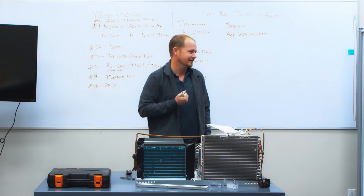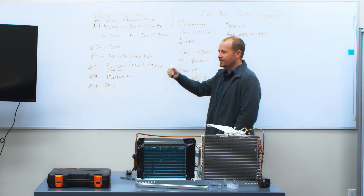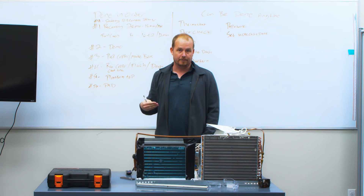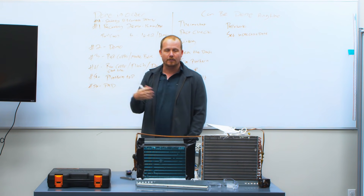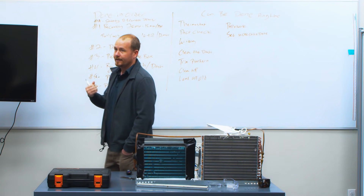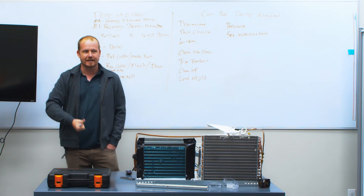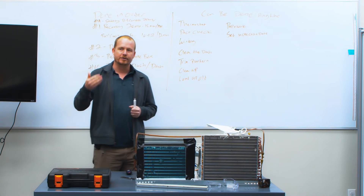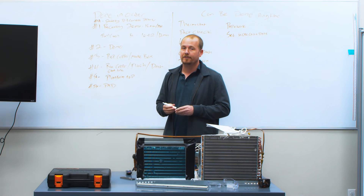The point is: when you're learning these things, intentionally think before you show up on the job about what needs to be done in order — things that are non-negotiable — versus things that can be used as filler while you're waiting. Getting the system under pressure as quickly as possible is critical, so you can make sure it sits long enough to confirm no leaks. Having a leak means you're chasing it the rest of the job — your vacuum won't pull down and you have to start over.